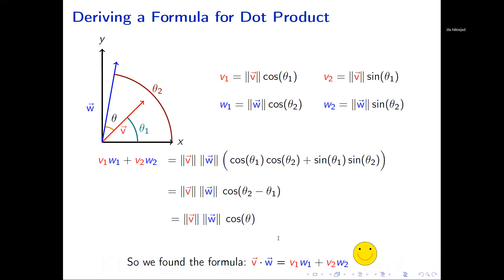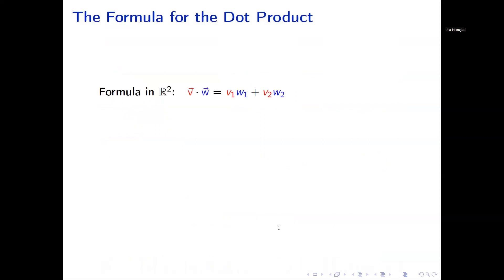Now that we've derived it, the formula I'll use going forward is: v dot w equals the product of their first components plus the product of their second components — v1 times w1 plus v2 times w2 — and in three dimensions, plus the product of the third components, v3 times w3.